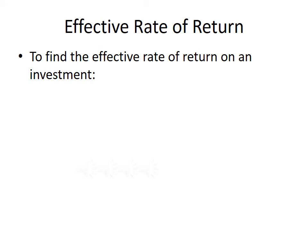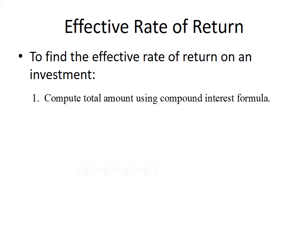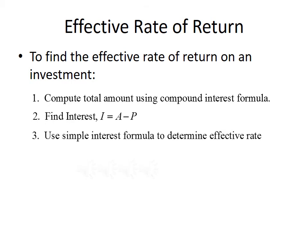Next we'll talk about effective rate of return. To find the effective rate of return on an investment, we do the following: first, compute the total amount using the compound interest formula. Second, find the interest earned by looking at the difference between the amount A and the principal invested P. Finally, use the simple interest formula with the interest found in step two to determine the effective rate — we'll solve for R.